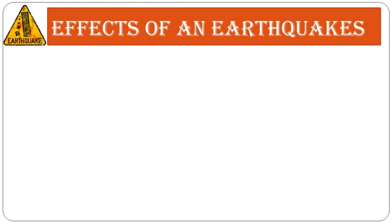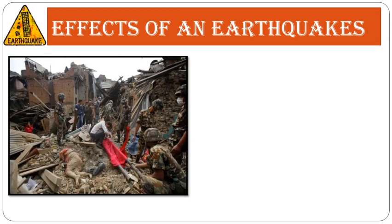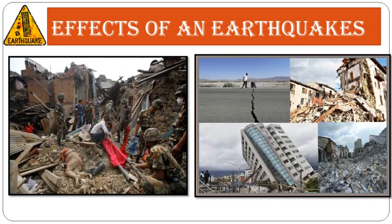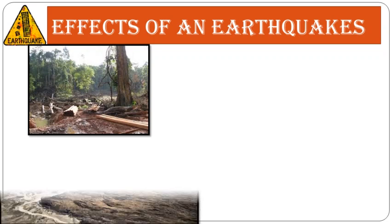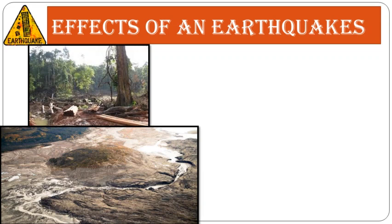Now let's learn about the effects of an earthquake. Effects include: loss of human beings, wild animals, and pets; economic loss at a large scale; electric poles, pipelines, houses, buildings, roads, and railway tracks are destroyed. There is also ecosystem destruction due to loss of biodiversity — that is, loss of flora and fauna, both animals and plant life. The direction of flow of rivers and streams also changes due to cracks and vibrations caused by the earthquake.